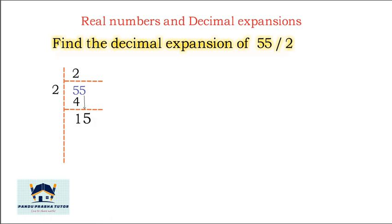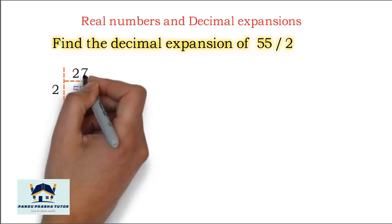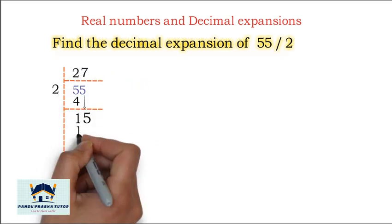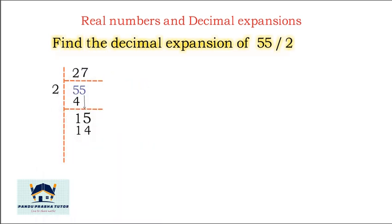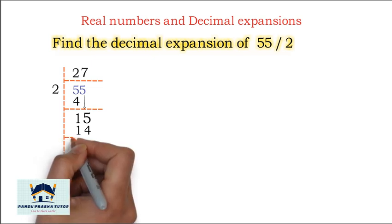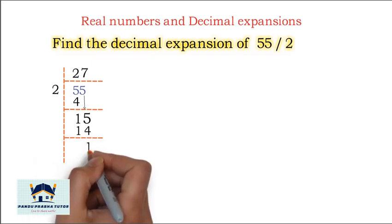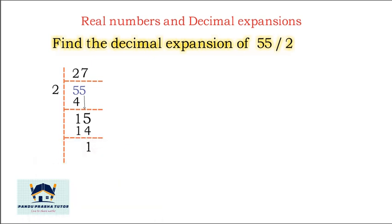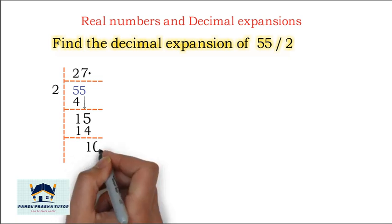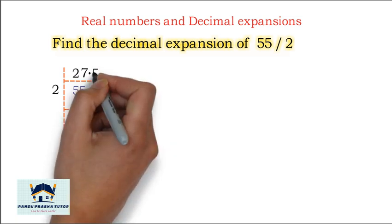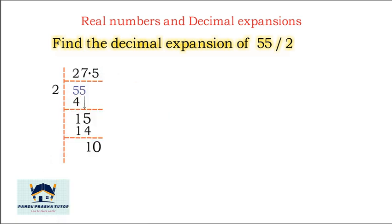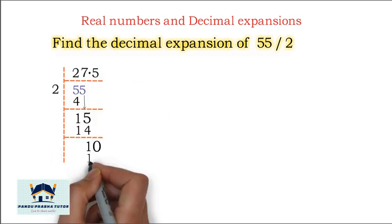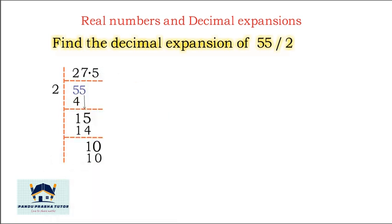2 goes into 15: 7 times 2 is 14, remainder is 1. Put the decimal point and take 0. 2 goes into 10: 5 times 2 is 10, remainder becomes 0.